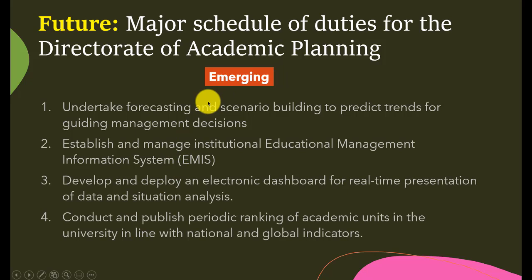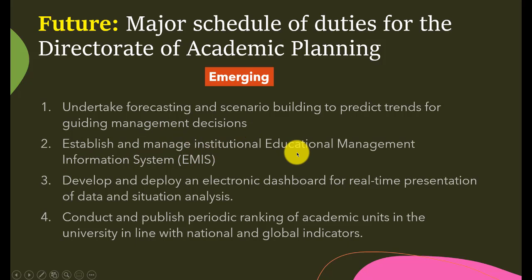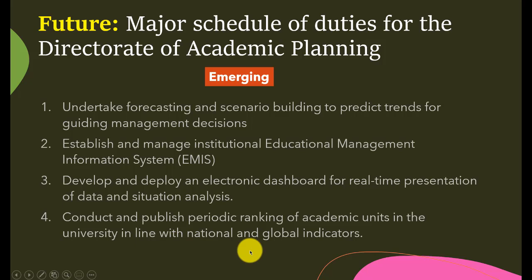Now, what are the new duties I imagine for the future — within that 10-year band? The Directorate of Academic Planning will undertake forecasting and scenario building, which we are not doing now but must do, to predict trends for guiding management decisions. It will establish and manage an institutional Educational Management Information System (EMIS), develop and deploy an electronic dashboard for real-time presentation of data and situation analysis, and conduct and publish periodic ranking of academic units in line with national and global indicators.